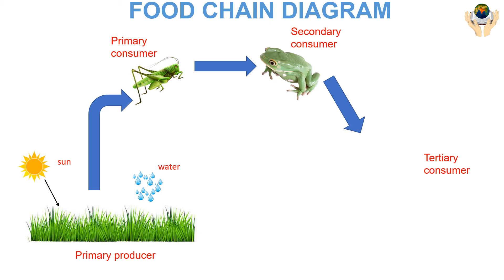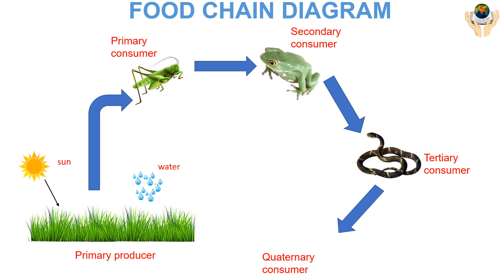The organisms that eat the secondary consumers are called tertiary consumers. These are carnivores eating carnivores. Some food chains have additional levels, such as quaternary consumers — carnivores that eat tertiary consumers. Organisms at the very top of the food chain are called apex consumers.